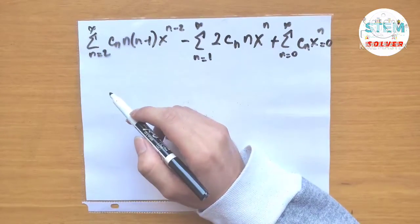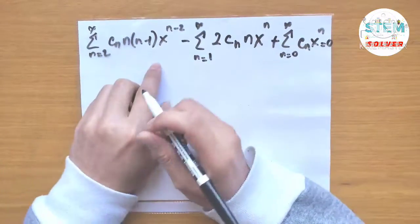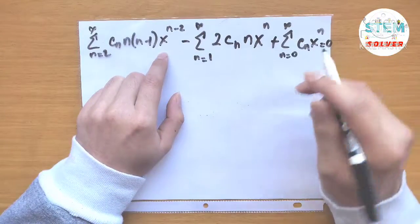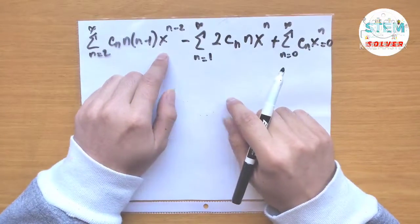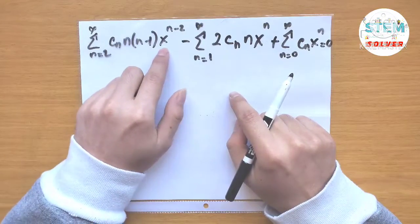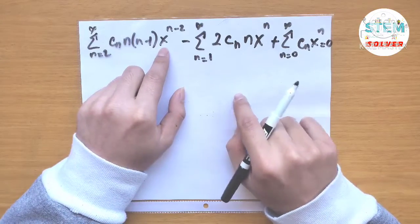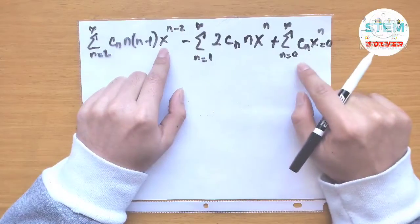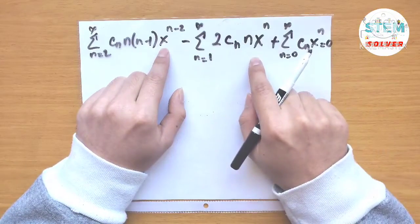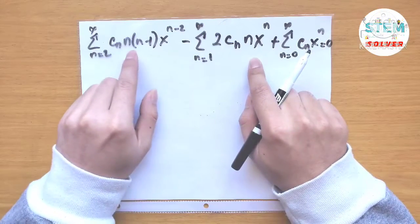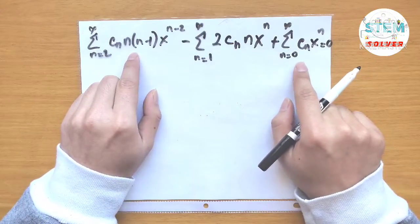Now to solve this differential equation, first take a look at the exponents. We need to find the biggest exponent. When plugging into the series starting at n equals 0, we get x to the 0; starting at n equals 1, we get x to the first. So x to the first is the highest exponent, meaning we need to pull out terms from those series.